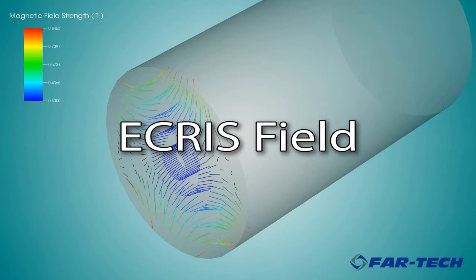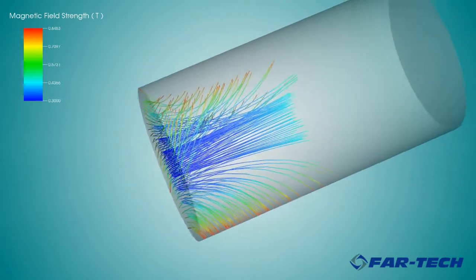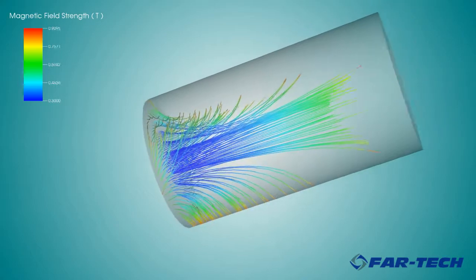The complex looking magnetic field lines in an ECRIS can be understood more simply by looking at the fields generated by the coils and the bar magnets separately.